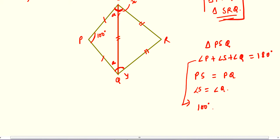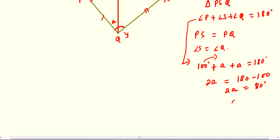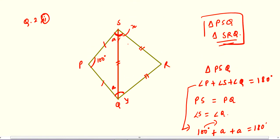Angle P is 100 degrees, angle S is A, and angle Q is A, so 100 plus A plus A equals 180 degrees. Transpose 100 to the right-hand side: 2A equals 180 minus 100, which is 80 degrees. So A equals 40 degrees. This angle is 40 degrees and this is also 40 degrees.